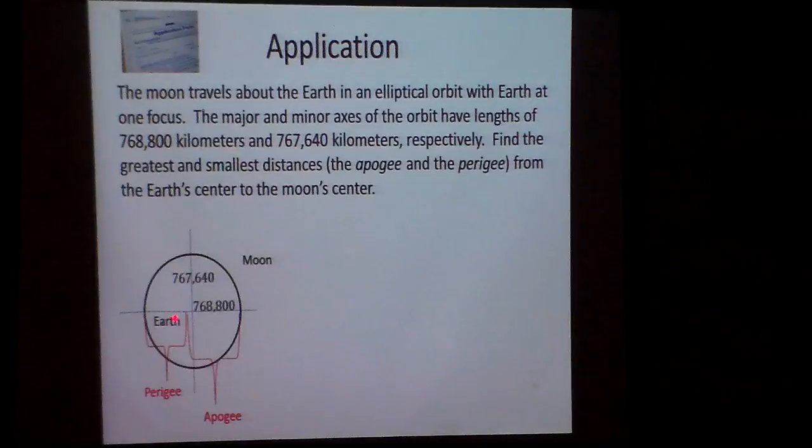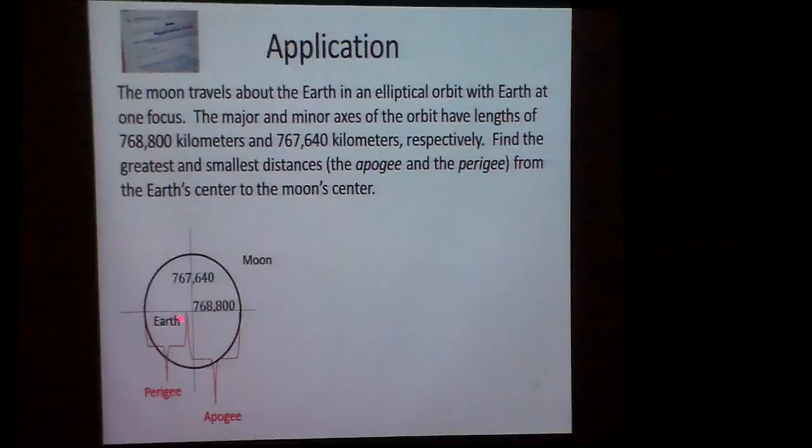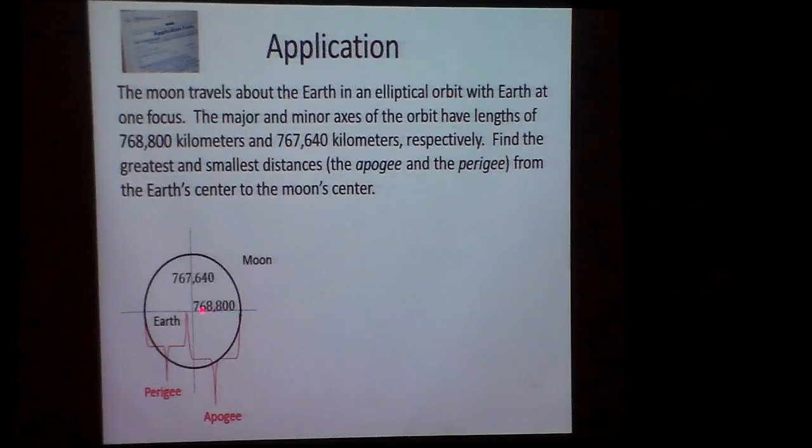Perigee is the distance from the earth to its orbit, like here, the short distance. That would, in a sense, be an A minus C. And the apogee would be the distance here of A plus C.